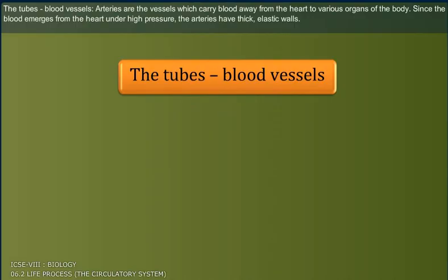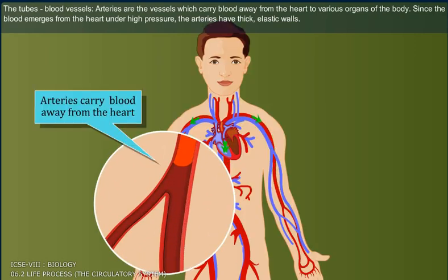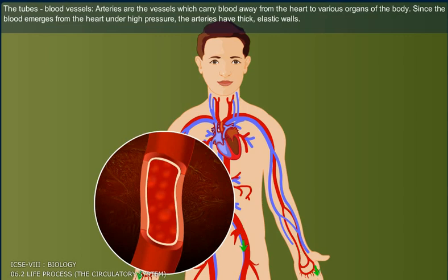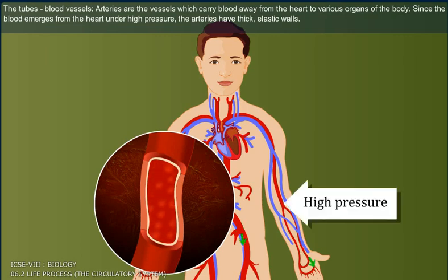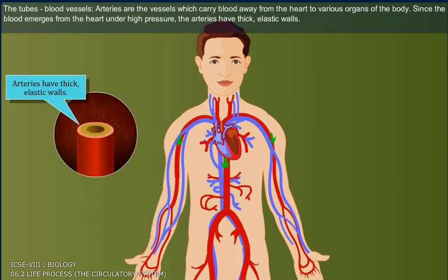The tubes, i.e. the blood vessels. Arteries are the vessels which carry blood away from the heart to various organs of the body. Since the blood emerges from the heart under high pressure, the arteries have thick, elastic walls.